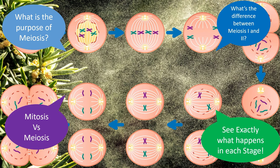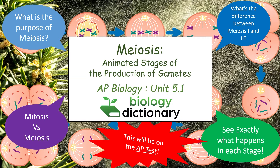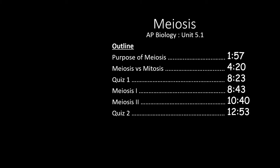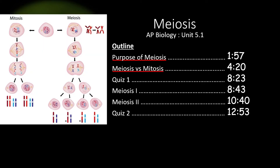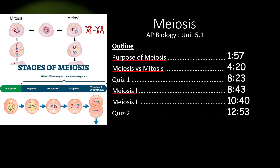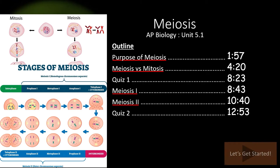Knowing the steps and purpose of meiosis is required for the AP Biology test, so stick with us as we go through the entire process of meiosis and how it works. In this video, we cover section 5.1 of the AP Biology curriculum. First, we'll take a look at the purpose of meiosis and why sexually reproducing organisms need to formulate haploid gametes. Then, we'll look at the specific differences between meiosis and mitosis, and why they result in different outcomes. After the first quiz, we'll take a look at the two separate cell division events in meiosis: meiosis 1, where homologous chromosomes are separated, and meiosis 2, where sister chromatids are separated. If you only need to review one part of this lesson, feel free to skip forward to the times outlined here. Otherwise, let's get started.